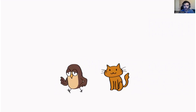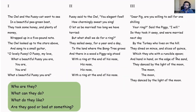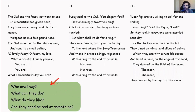So here we have Owl and Pussycat. Now, let's think — what do we know about these characters already? Let's look back at the poem. I would like you to pause the video after I finish speaking and see what you can find out about the Owl and the Pussycat. We need to answer: who are they, what can they do, what do they like, what do they not like, and are they good or bad at something? So pause the video, skim the poem, and write down any character traits you can find.